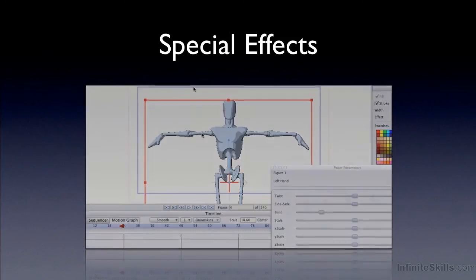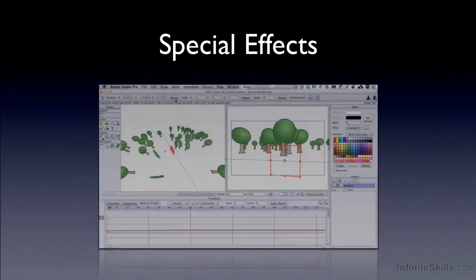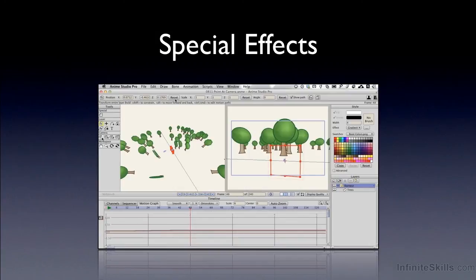We also look at some of the particle generation capabilities. Most of the samples that ship with the program are pretty rudimentary, but you can go so much further than that. We take a look at how to engage these tool sets in the course of the tutorial series. Additionally, you can animate in 3D — you can use 2D animation but do it in the context of a 3D space. So we look at ways to bring cameras through the scene and make the components play nice with the camera as you work in 3D.